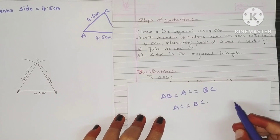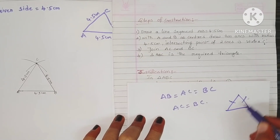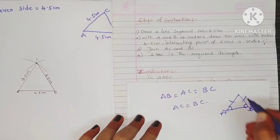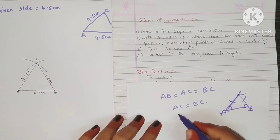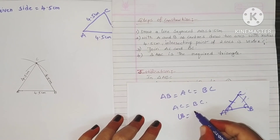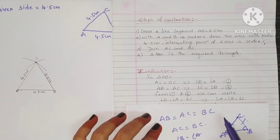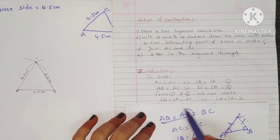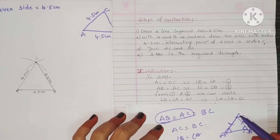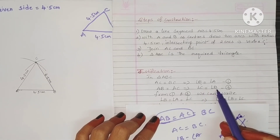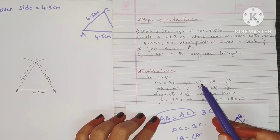In a triangle, if two sides are equal, the angles opposite to those sides are equal. Here, the opposite angle of AC is angle B, and the opposite angle of BC is angle A. So since AC equals BC, angle B equals angle A — that is equation 1. Now AB also equals AC. The opposite angle of AB is angle C, and the opposite angle of AC is angle B. So angle C equals angle B — that is equation 2.